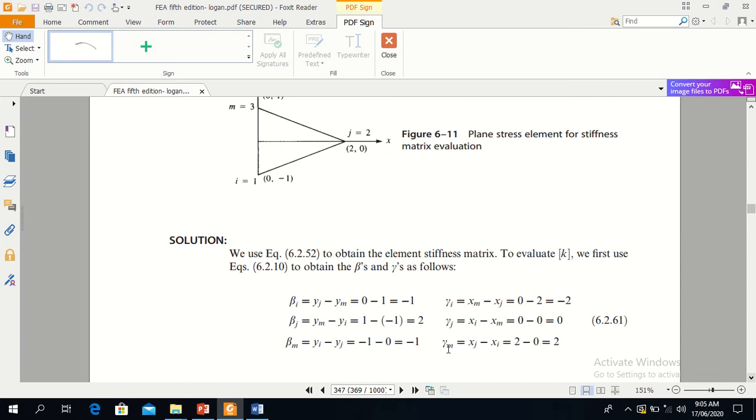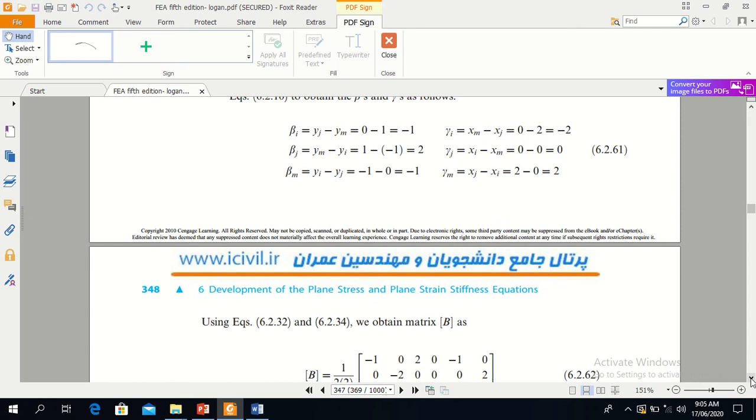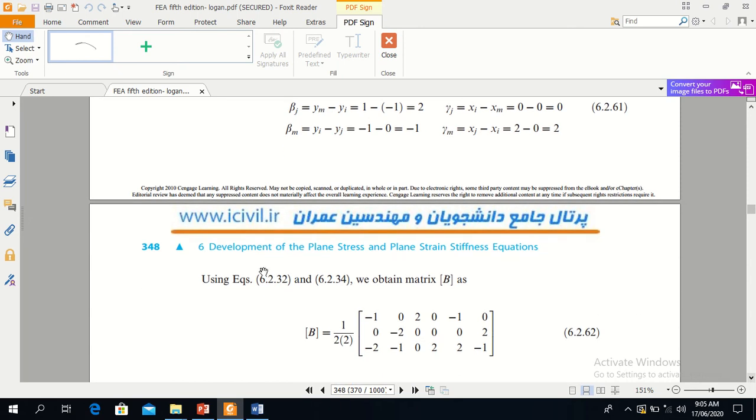To find B matrix. B matrix can be found by using equations 6.2.32 and 6.2.34. So I have let you note these two equations as well.